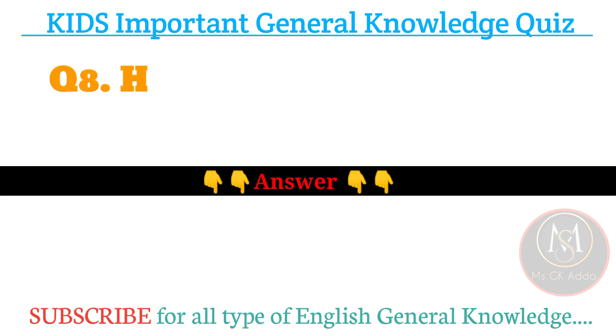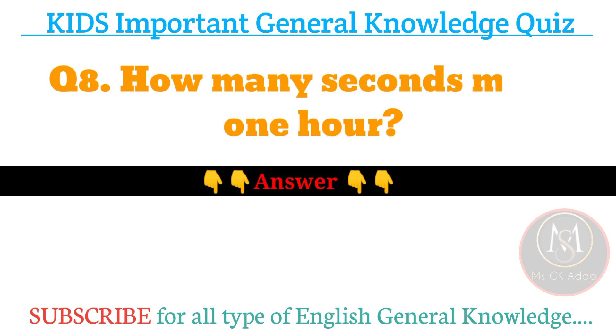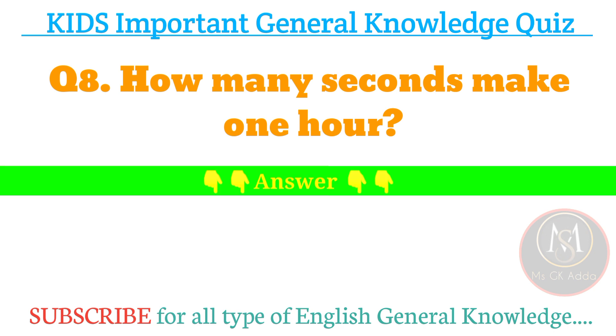Next, number eight: how many seconds make one hour? Answer: three thousand six hundred seconds.